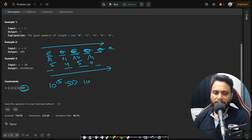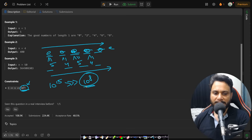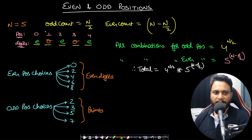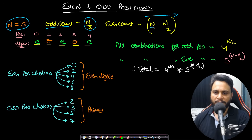This would definitely not run within one second. We need to reduce the complexity so the total operations stay below 10^8. Binary exponentiation helps bring the time complexity down to O(log n). The key observation is: if n equals 5, positions go even, odd, even, odd, even (since indexing starts at 0). The odd position count is always n/2, and the even position count is n minus n/2.